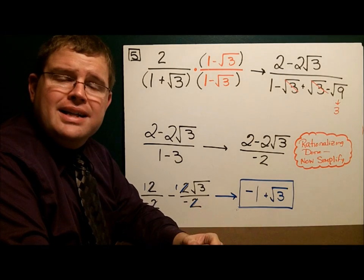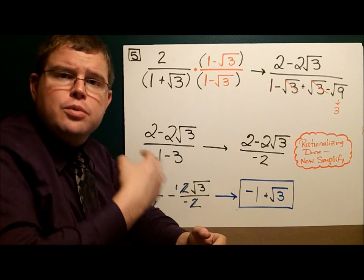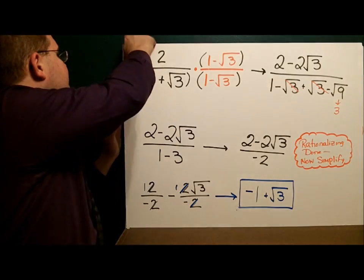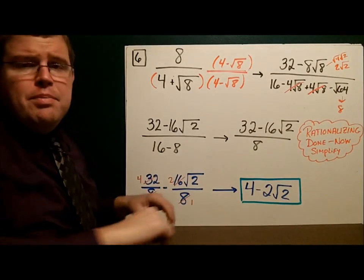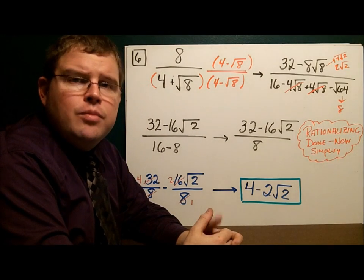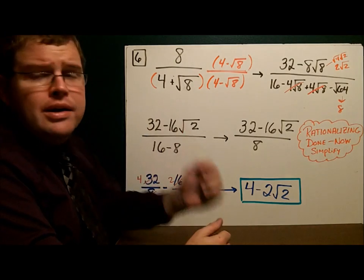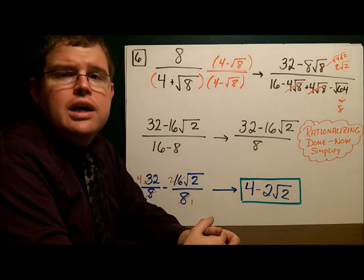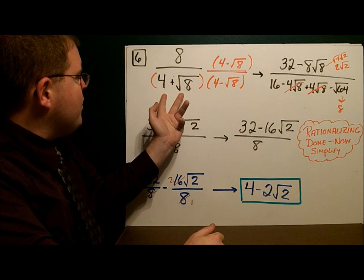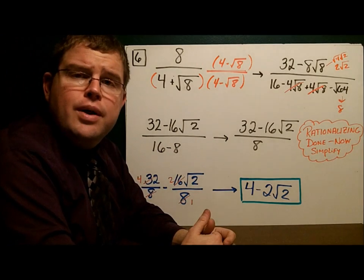I told you there were a lot of steps — I wasn't kidding. Let's take a look at another example and work our way through it. Example 6: we have 8 over 4 plus the square root of 8. I have a binomial with addition in the denominator, so I need to use the conjugate of the denominator — 4 minus the square root of 8.